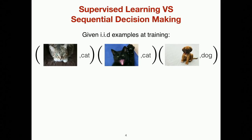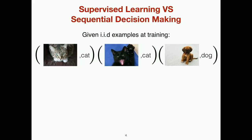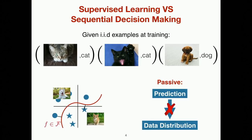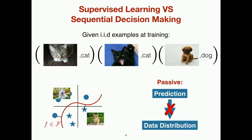Before we dive into the details, I want to quickly point out the difference between supervised learning and sequential decision-making. Supervised learning is probably the first thing we learn in ML 101: we have a set of training data where each point is IID sampled from some unknown distribution, we fit a function approximator, and given a new test image, we make a prediction. The key here is that this whole process is passive — your prediction does not affect the future data distribution.